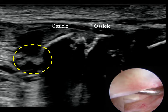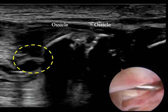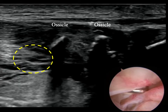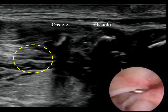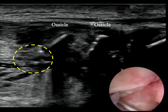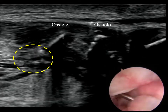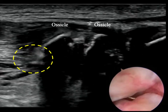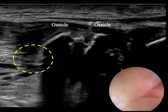The ossicle can be identified by touching it with an arthroscopic probe, confirmed in the ultrasound image. We can see that the probe is in the area circled by the dotted yellow line.